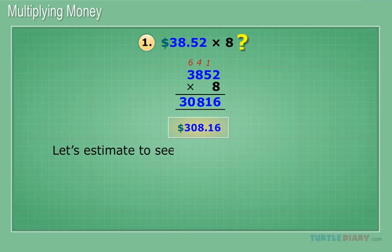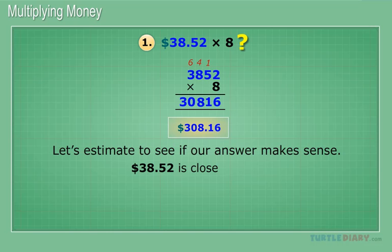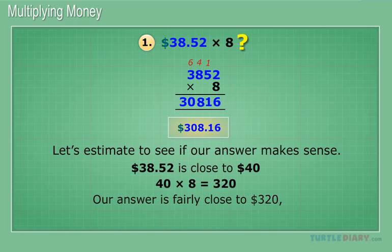Let's estimate to see if our answer makes sense. $38.52 is close to $40. Our answer is fairly close to $320, so we know this is a reasonable answer.